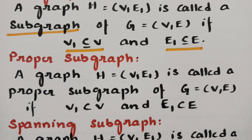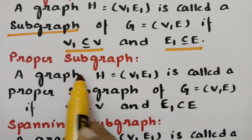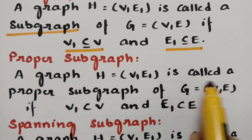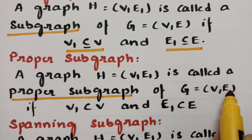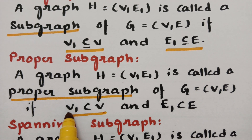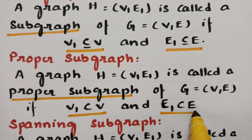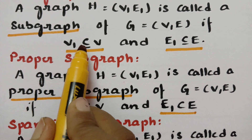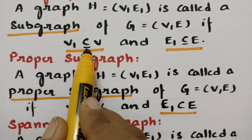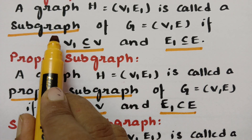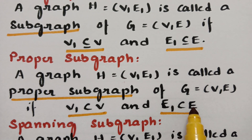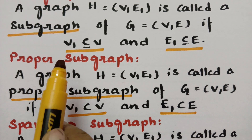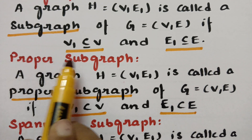Coming to the proper subgraph — a graph H = (V1, E1) is called a proper subgraph of G = (V, E) if V1 is strictly a subset of V and E1 is strictly a subset of E. If there is equality (subset or equal), we say subgraph; if it is strictly a subset, then we say it is a proper subgraph.